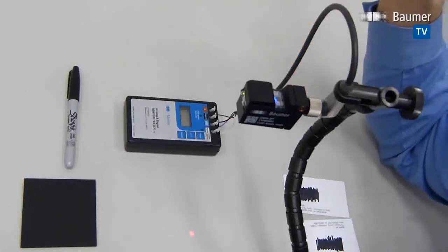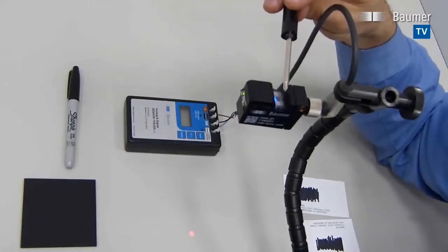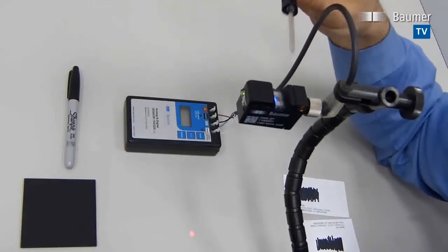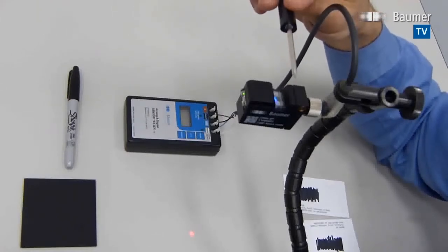We put the sensor into teach mode by using the QTeach function. You use the QTeach function by putting a ferromagnetic tool, that's any tool with iron, into the QTeach slot.